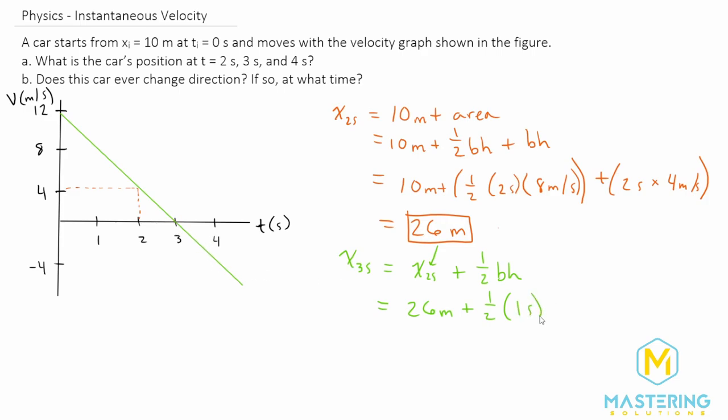So 1 second times the height, which is 4 meters per second. So 4 times 1 is 4, so that'll be 2. So you can put it into the calculator if you want, but with some quick mental math, we know it's going to be 28 meters for position at t equals 3 seconds.